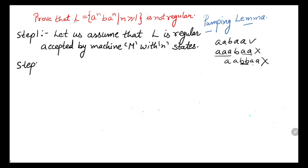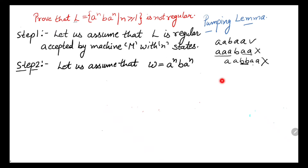These are the fixed steps which we follow in each and every example. For a detailed description on the pumping lemma you can look at my previous video. In step two, we assume a string w. We will assume the generalized string given in the language, that is w equals a raised to the power n, b, a raised to the power n. The length of w equals 2n plus 1.